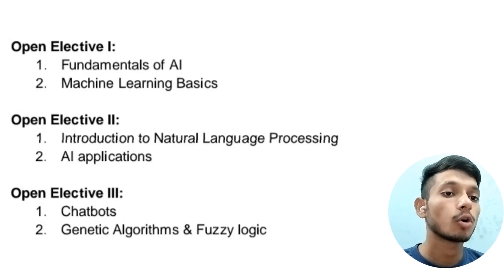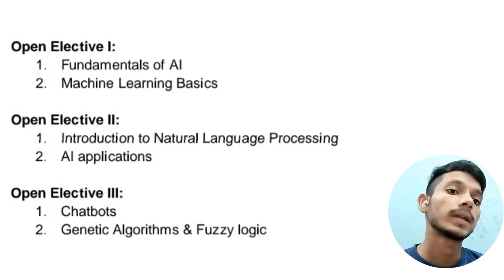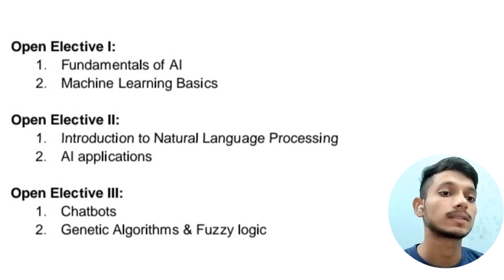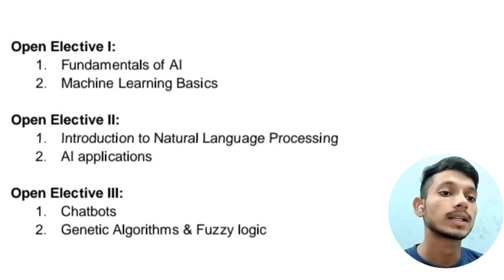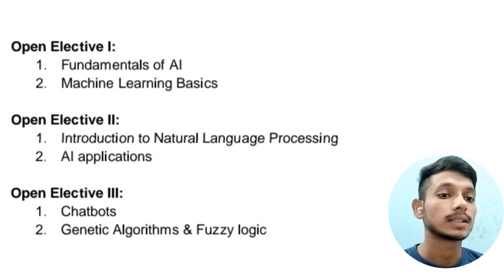When it comes to open electives, there are three open electives. In Open Elective 1, the subjects are Fundamentals of AI and Machine Learning Basics. In Open Elective 2, the subjects are Introduction to Natural Language Processing and AI Applications. In Open Elective 3, the subjects are Chatbots, Genetic Algorithms, and Fuzzy Logic.